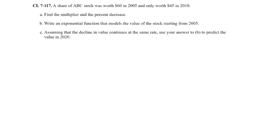Question 117: A share of ABC stock was worth $60 in 2005 and $45 in 2010. Find the multiplier and the percent decrease. We set 2005 as time zero, so 5 years later gives us the ordered pair (5, 45). Setting up 45 equals 60 times b to the 5th, then dividing both sides by 60 gives 0.75 equals b to the 5th.